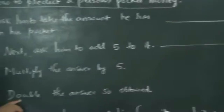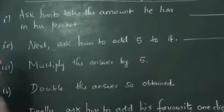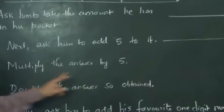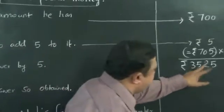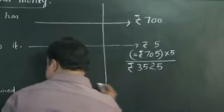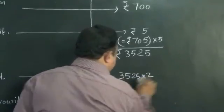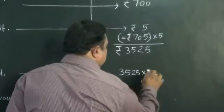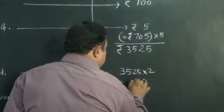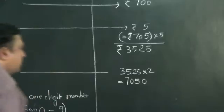Okay. Now double the answer. He has got an answer of 3525. I am going to double it. So I am just going to multiply 3525 into 2. So this gives 7050.